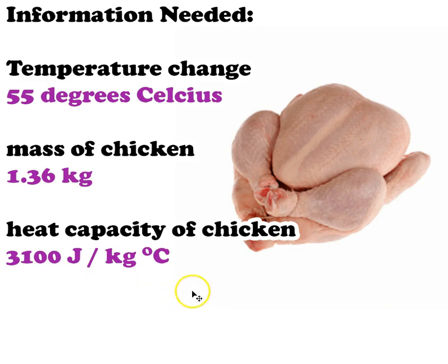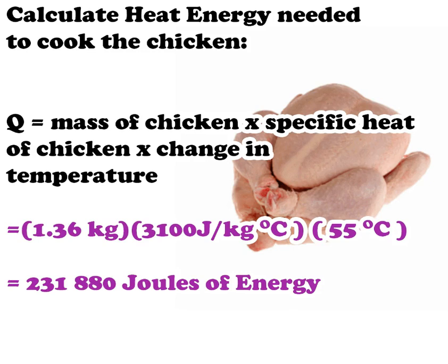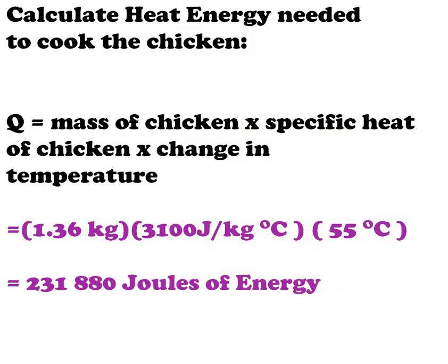But when you're given that delicious bibimbap, you're going to be given it in a stone bowl. Why a stone bowl? Because stone takes its time sending heat through itself. Therefore, the heat capacity is dependent upon the material and just like everything else, chicken has it too. 3100 joules per kilogram degrees Celsius. We're now going to calculate the heat energy needed to cook the chicken. That is usually indicated by the term Q.